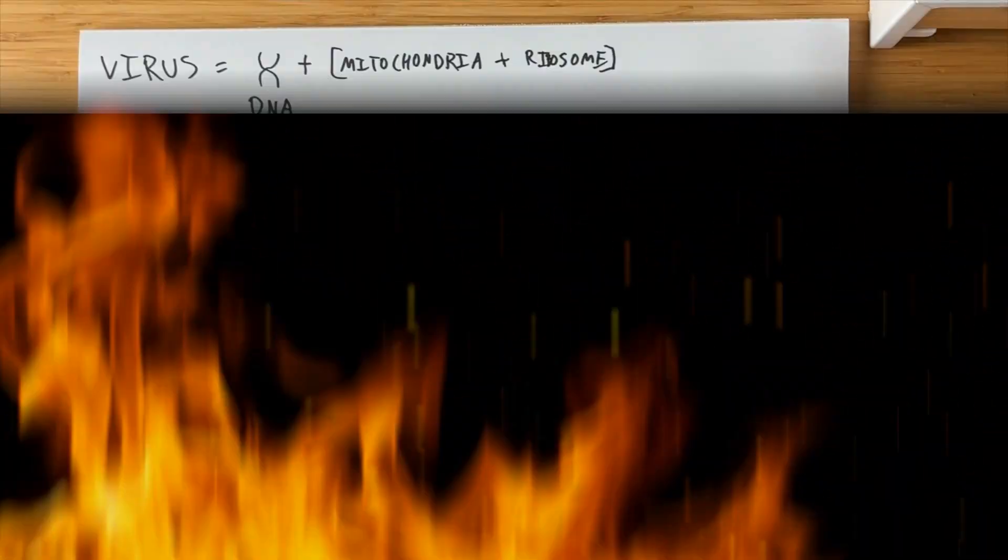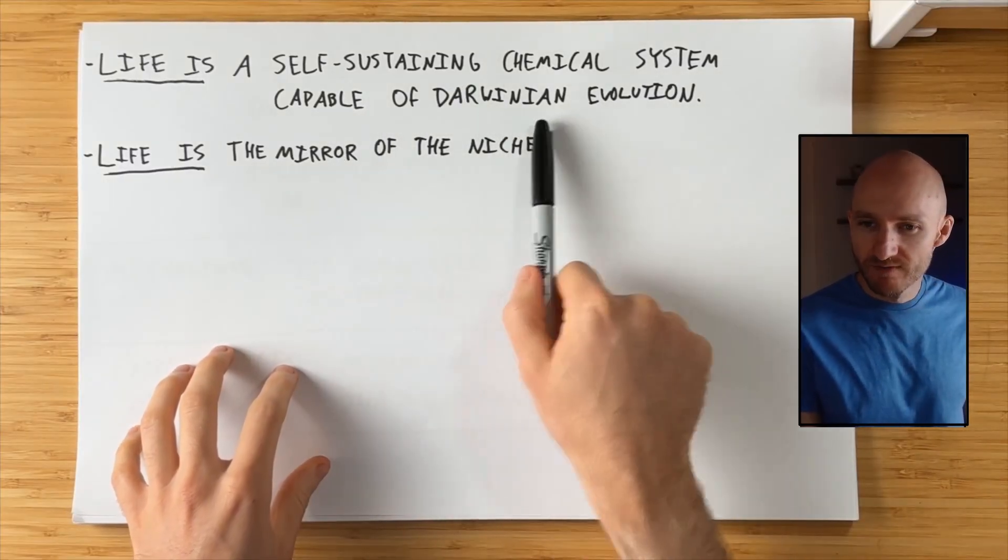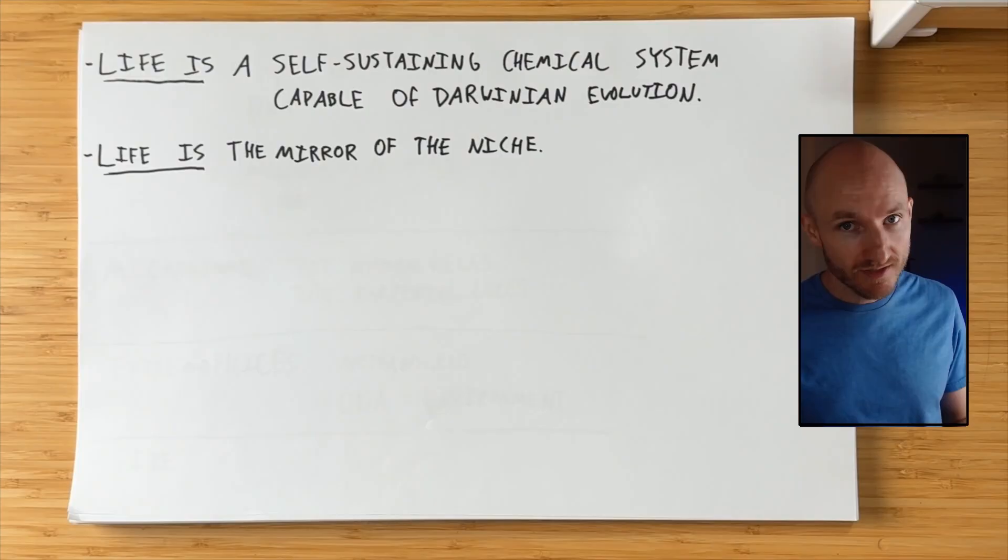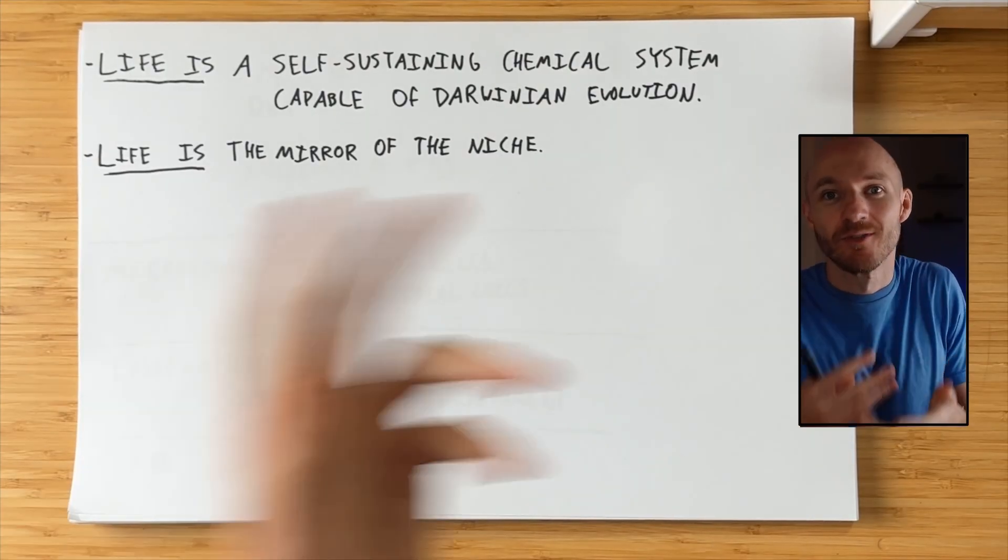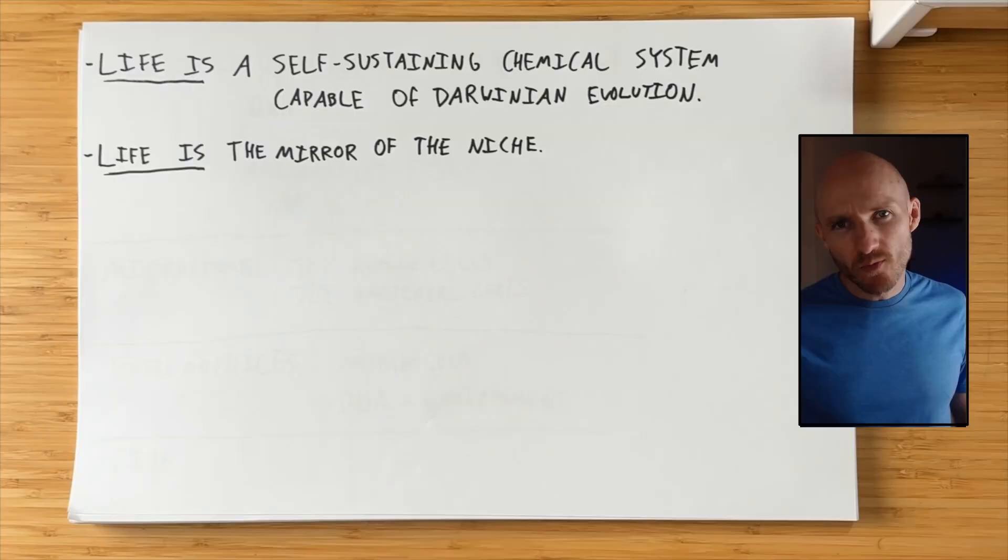And I think that's an interesting question. When we look at this, life is a self-sustaining chemical system capable of Darwinian evolution. Fire is definitely a self-sustaining chemical system. It burns, and then it burns until it runs out of its energy and its environment. Is it capable of Darwinian evolution, though? That's arguable.